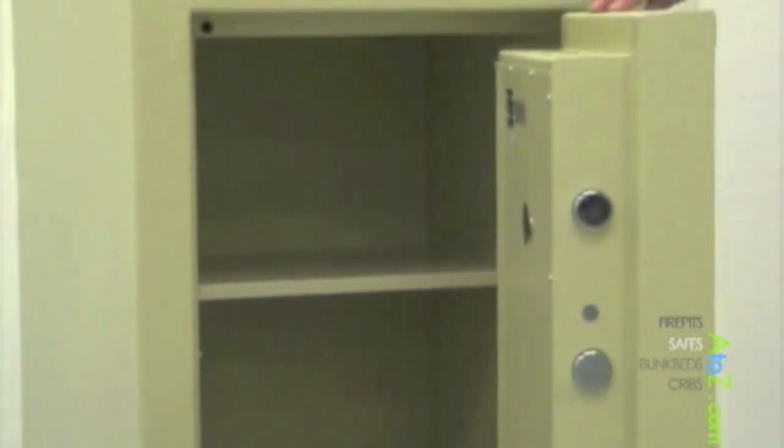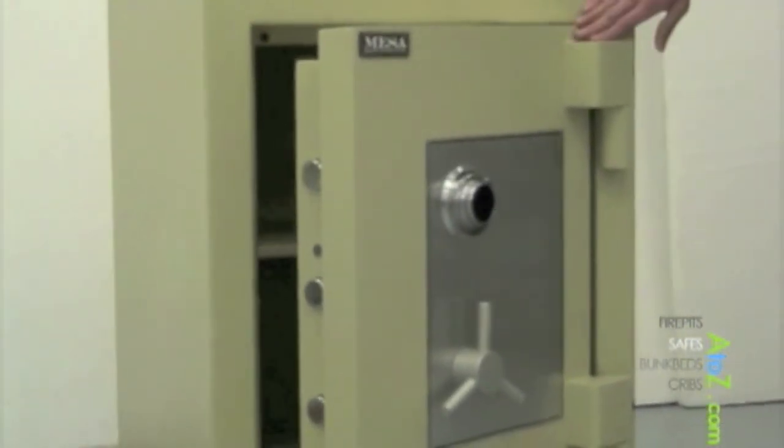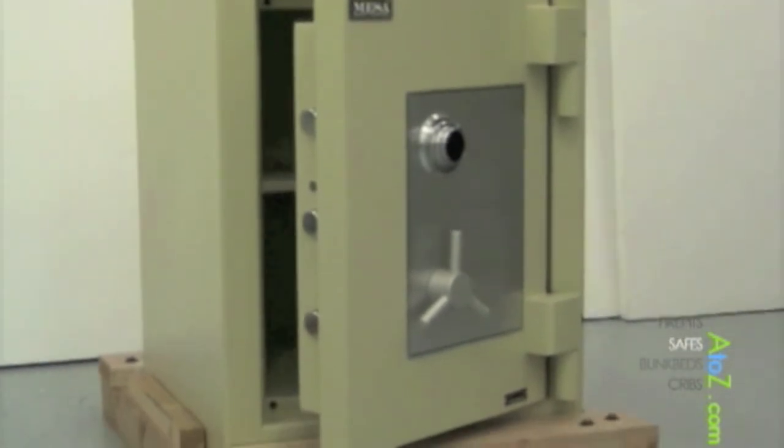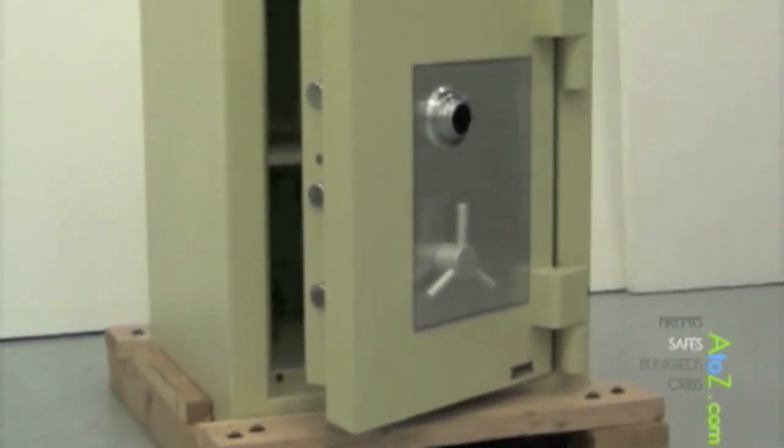Featuring heavy steel solid hinges, the TL30 also offers a solid steel hard plate that covers the entire door.